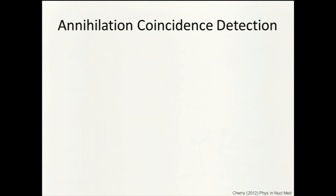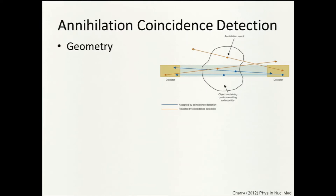This brings us to annihilation coincidence detection. Our abstract rat in cross-section is filled with a radioactive tracer whose radionuclei decay, emitting positrons that annihilate, producing outgoing photons on straight lines back-to-back. If we place detectors outside the subject and require that we only see signals arriving at the same time — in coincidence — then an annihilation event inside the subject will trigger two detectors simultaneously. An event outside the subject will hit one detector but not the other. The electronics require events to occur within a few nanoseconds of each other.